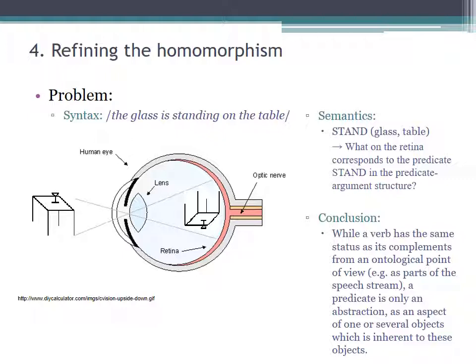Thus, the relationship between predicates and arguments, or relations and objects, is asymmetric to that between verbs and complements. That means, the homomorphism does not hold between verbs and predicates, or relations, in the same sense as it holds for arguments, or objects, and complements.